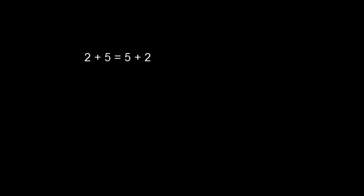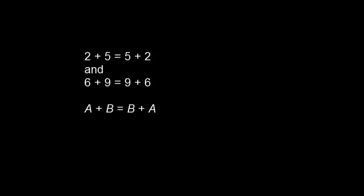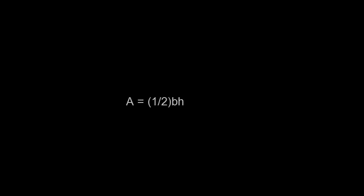Basically, variables are just generalizations of numbers. Rather than say two plus five equals five plus two, and six plus nine equals nine plus six, and so on, we can just say a plus b equals b plus a, and let a and b represent any numbers we like. Rather than say that the area of a triangle is formed by taking half of the product of the length of the base times the height, we can just say A equals one half b times h.